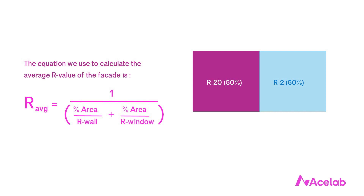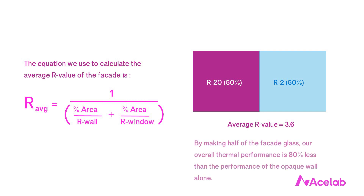If we use this equation on our hypothetical wall, we end up with an overall R value of 3.6. So the answer is B, about R4. And that's crazy, right? By making half of the facade glass, our overall thermal performance is 80% less than the performance of the opaque wall alone.